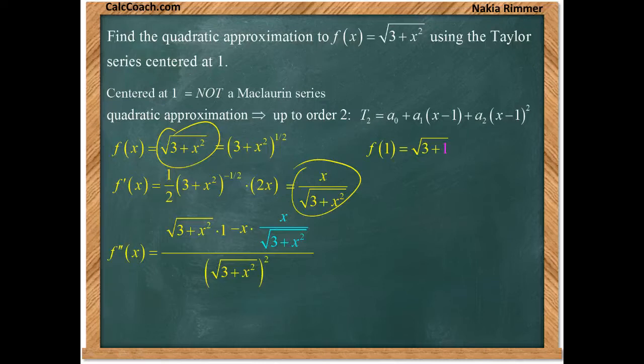Square the 1, we get a 1, add the 3, we get a 4. Remember, square root of 4 is 2. For the first derivative, replace the x's with 1's, and we get a half.